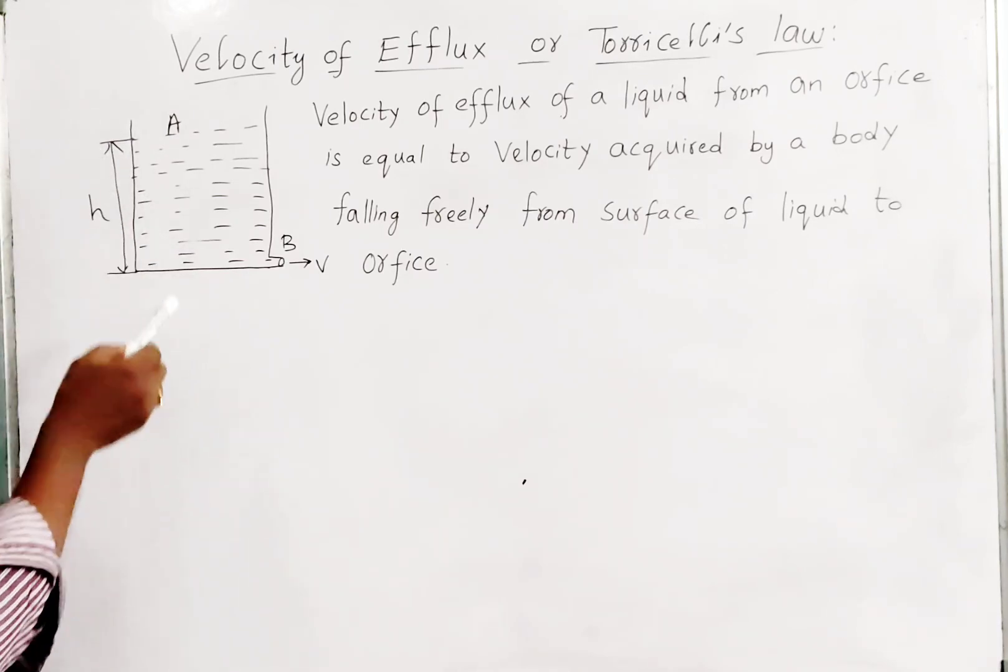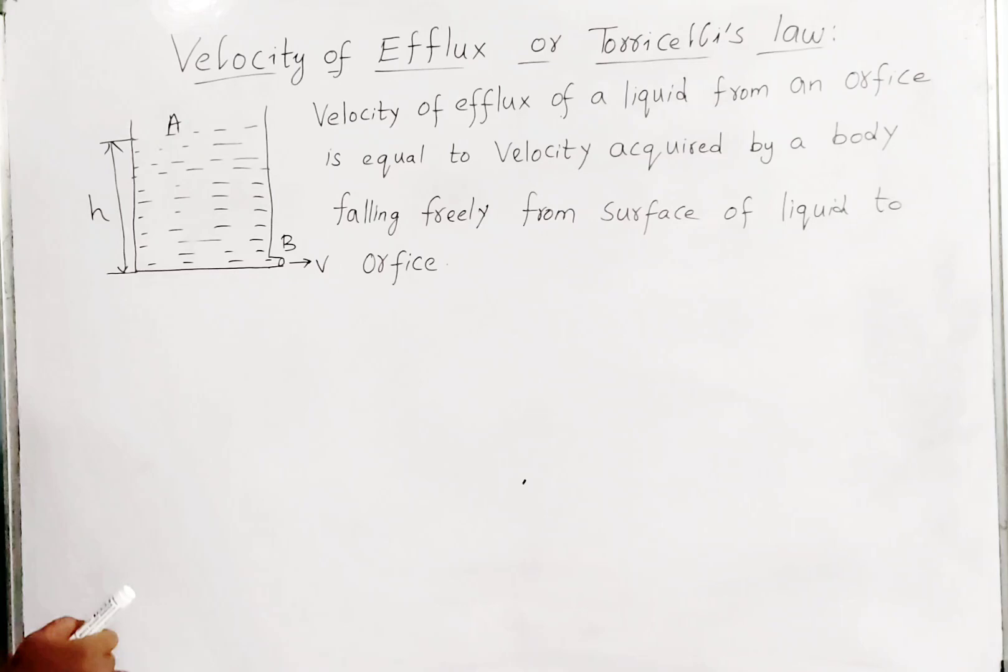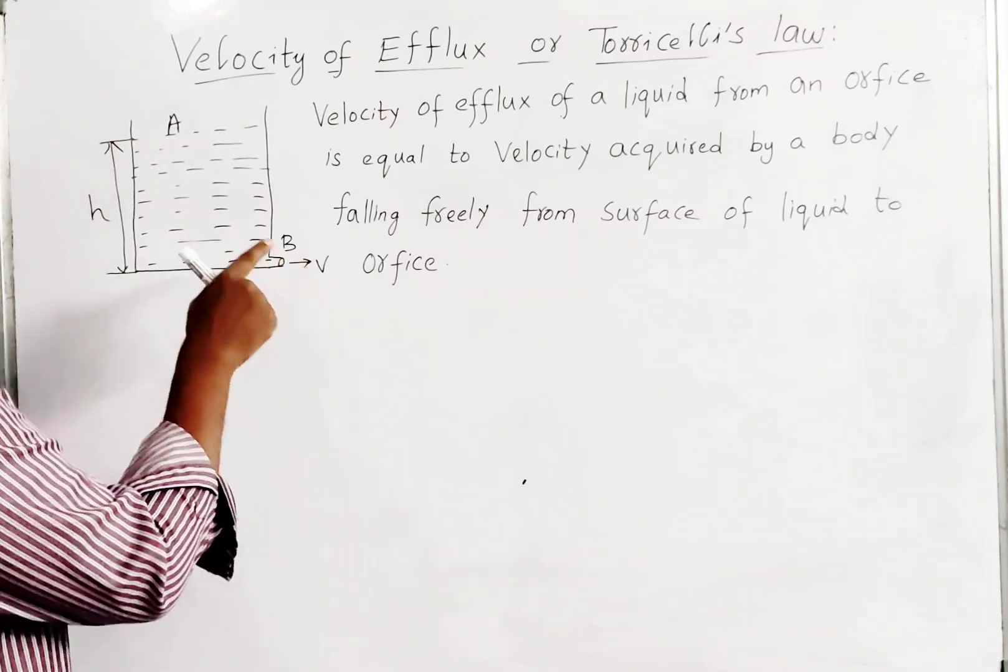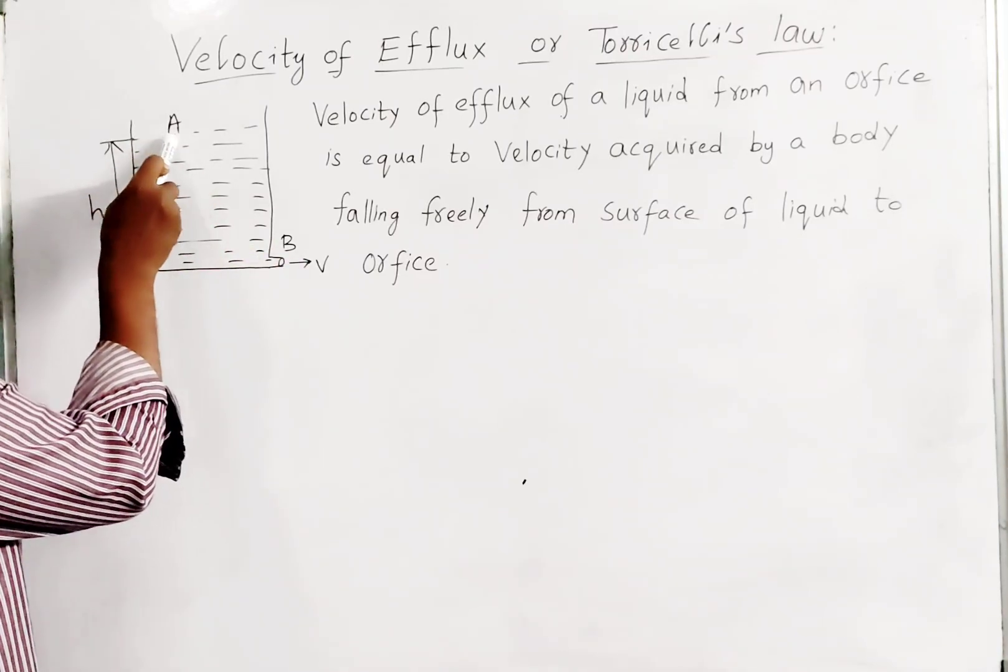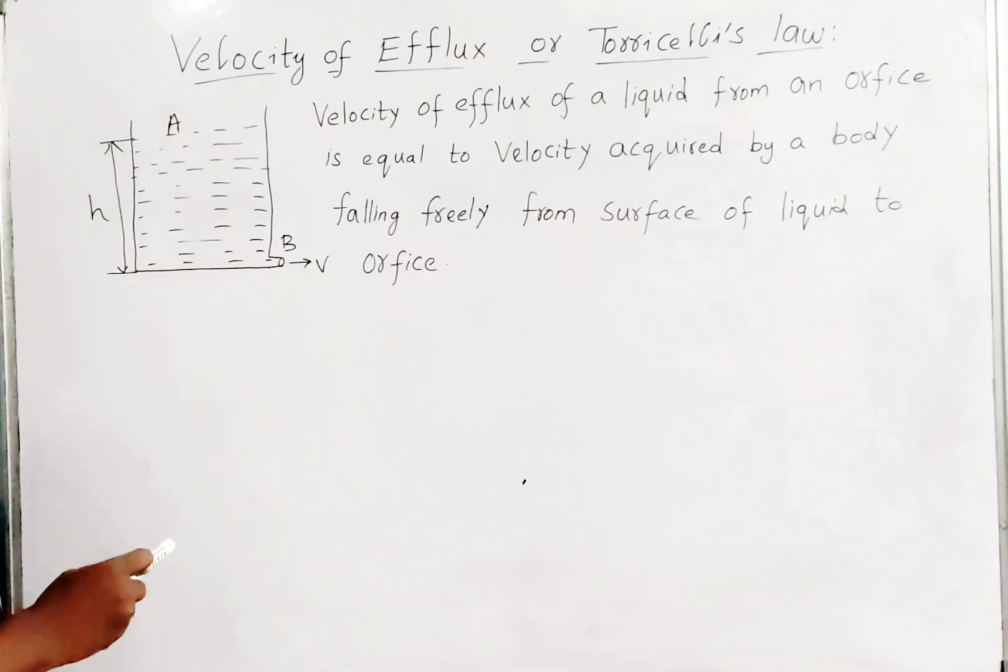Orifice is nothing but an outlet or a hole where the water can flow through. Here we are considering two points: point A and point B. Point A is at some height h, and point B is at the bottom of the vessel.